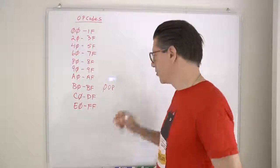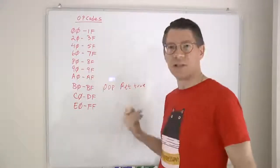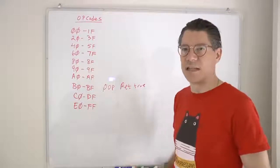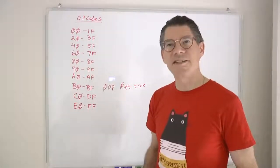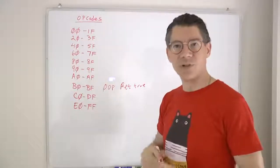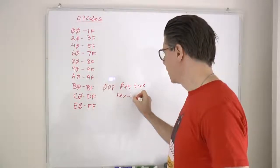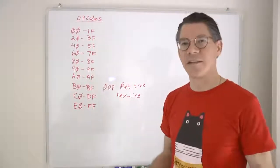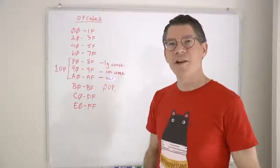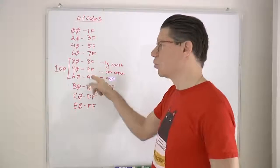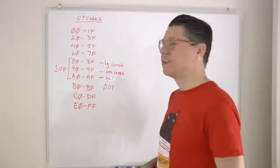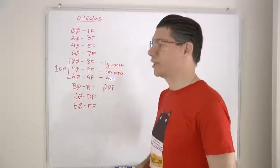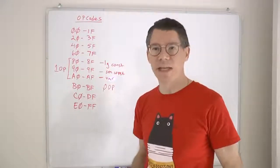There is an instruction called return true, which returns from the current subroutine with a true value. It takes no operands, so it's described by a single byte. Another zero-operand opcode is newline — all it does is output a newline onto the text output stream. The next series is called the one-operand opcodes, which are things like increment or return a value. These take a single operand — one byte for the opcode plus a certain number of bytes for the operand.